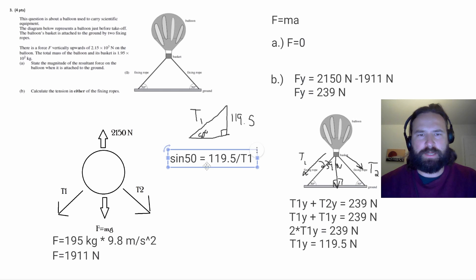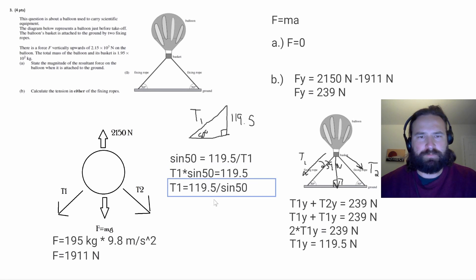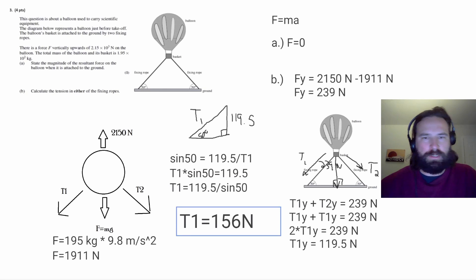So in this triangle, the sine of our angle, 50 degrees, is going to equal our force of 119.5 newtons over our T1 force, which is our hypotenuse. And then we can solve this pretty straightforward. Just multiply it by T1 on both sides and then divide by sine on both sides. And you get this equation, which you can just throw in your calculator. And that's going to give you 156 newtons for the tension force in one of these ropes.